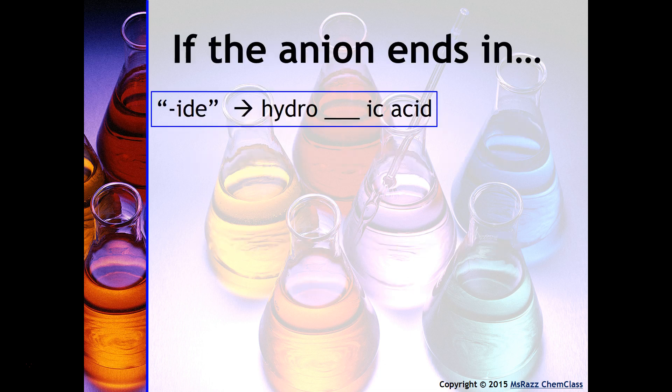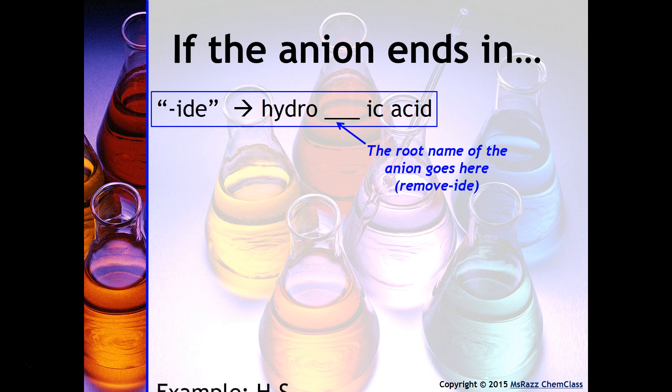If your anion ends in -ide, then you will change the acid name to 'hydro___ic acid,' where the root name of the anion goes in the blank — you just remove the -ide ending. For example, if you look at H₂S, notice that the S is called sulfide.